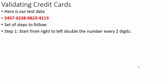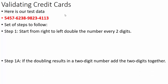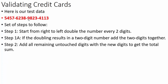Step one: start from right to left and double the number every two digits. So 1, 2 — we double this, it becomes a 2. 1, 2 — we double the 4, that becomes an 8. 1, 2 — 2 becomes 4. Then 8, 9 would be the second digit, giving 18. Well, 18 is not a single digit number. If the doubling results in a two-digit number, add the two digits together. So 1 plus 8 equals 9.